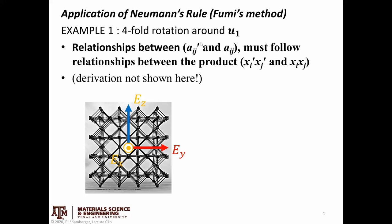We're going to work through the same exact example we worked through initially, which is considering a single fourfold rotation around lattice vector U1. Fumi's method basically points out that the relationship between the elements of the transformed and the original tensor have to follow the same relationship that the product X_i × X_j and X_i' × X_j' equals.